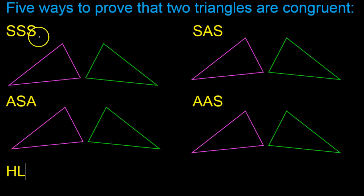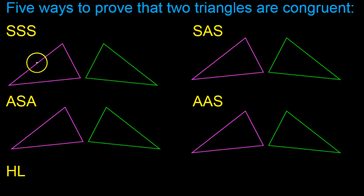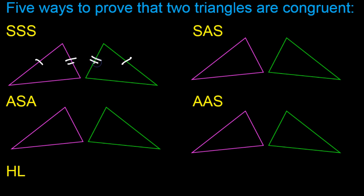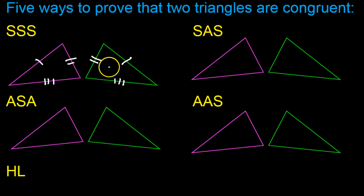SSS stands for side, side, side. That means that we can prove that two triangles are congruent if we know that we have three pairs of congruent sides. So if these sides are the same length, and if we know that these are the same length, and if we know that these are the same length, that's enough information to say that the triangles are congruent.